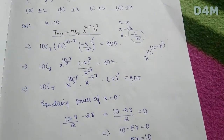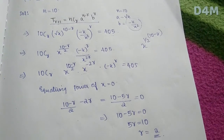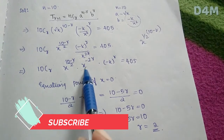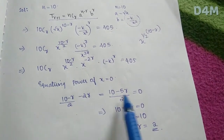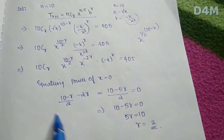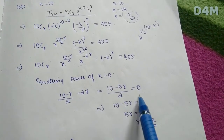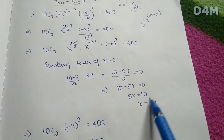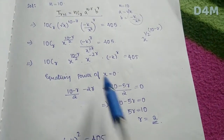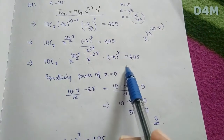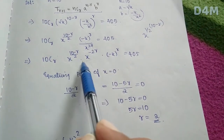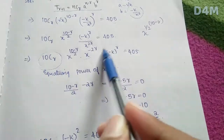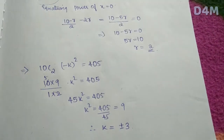For the constant term, the power of x must equal 0. Setting (10 - 5r)/2 = 0 gives 10 - 5r = 0, so 5r = 10, therefore r = 2. We substitute r = 2 back into the expression.